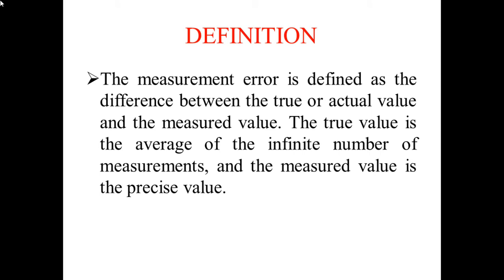Measurement error is defined as the difference between the true or actual value and the measured value. The true value is the average of an infinite number of measurements, and the measured value is the precise value. This is the main difference between actual measurements and measured values.